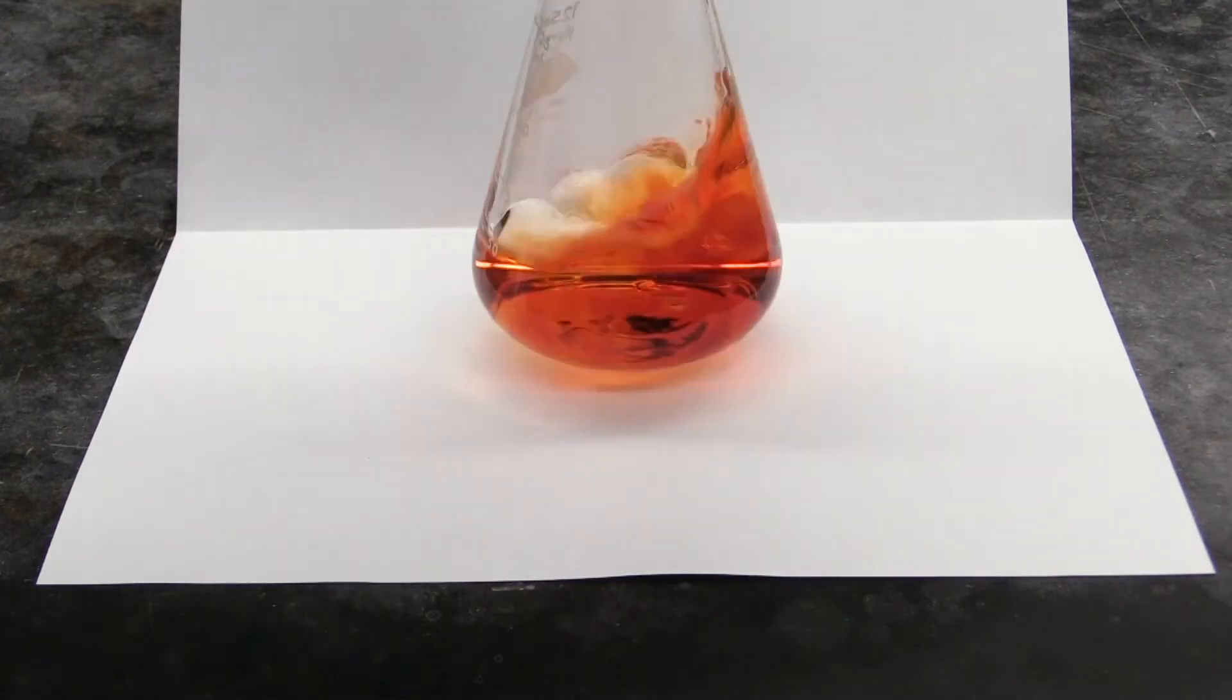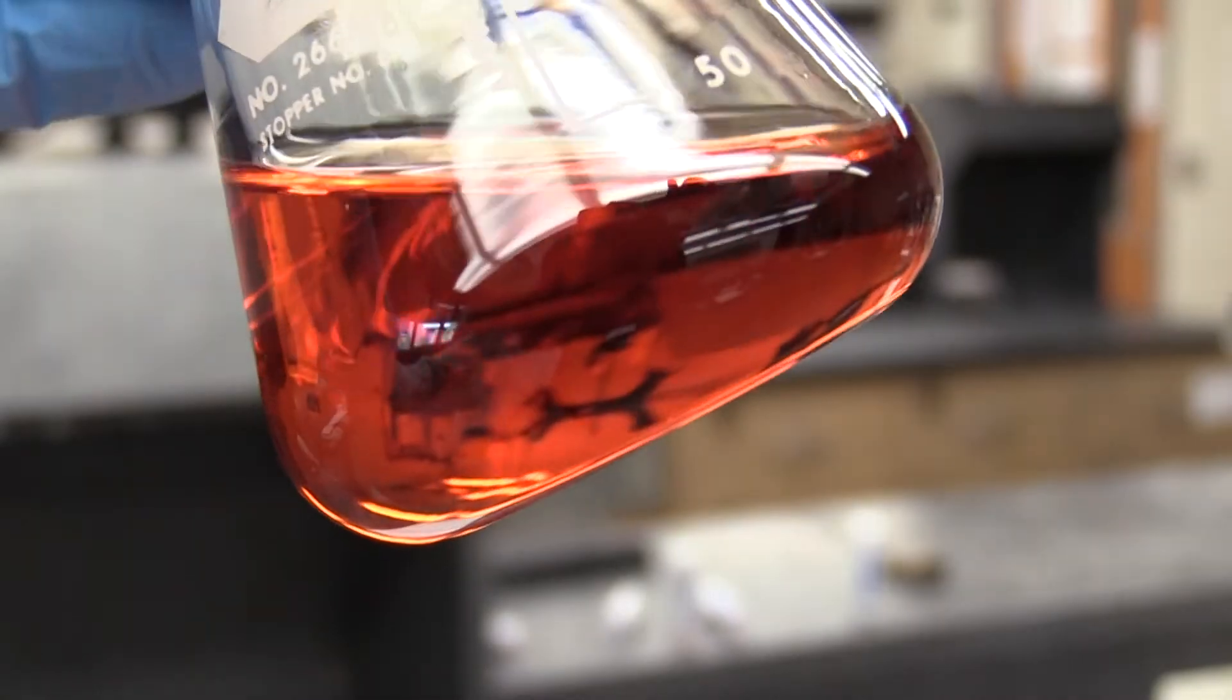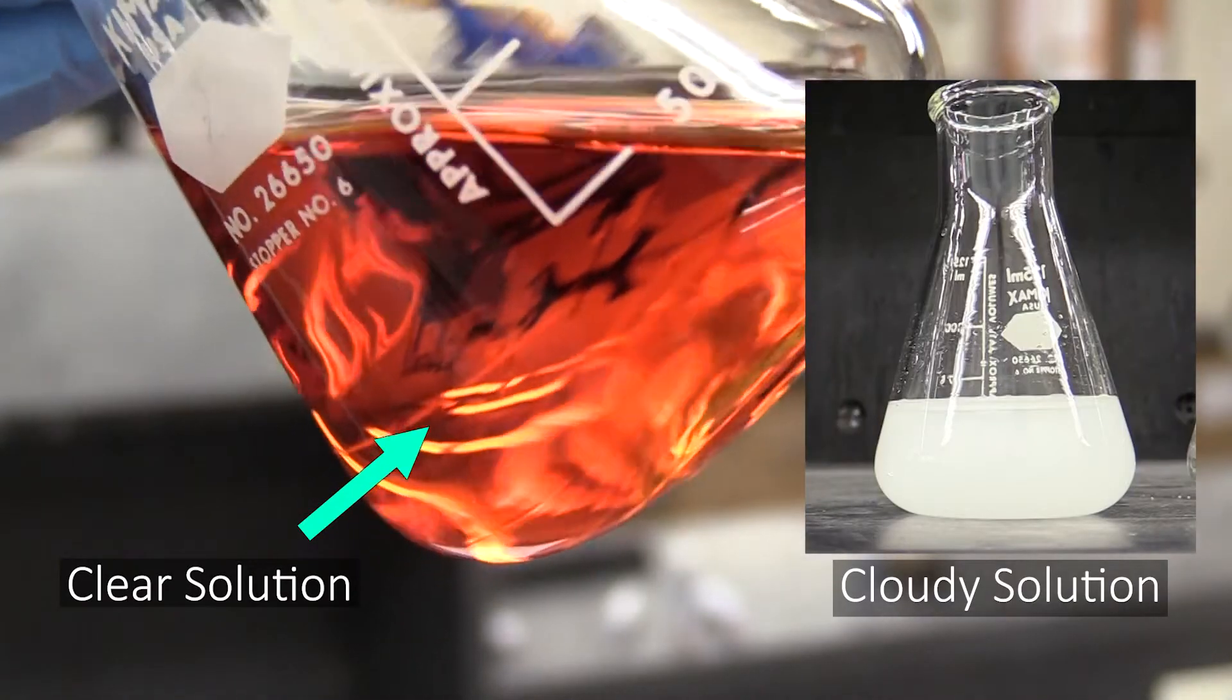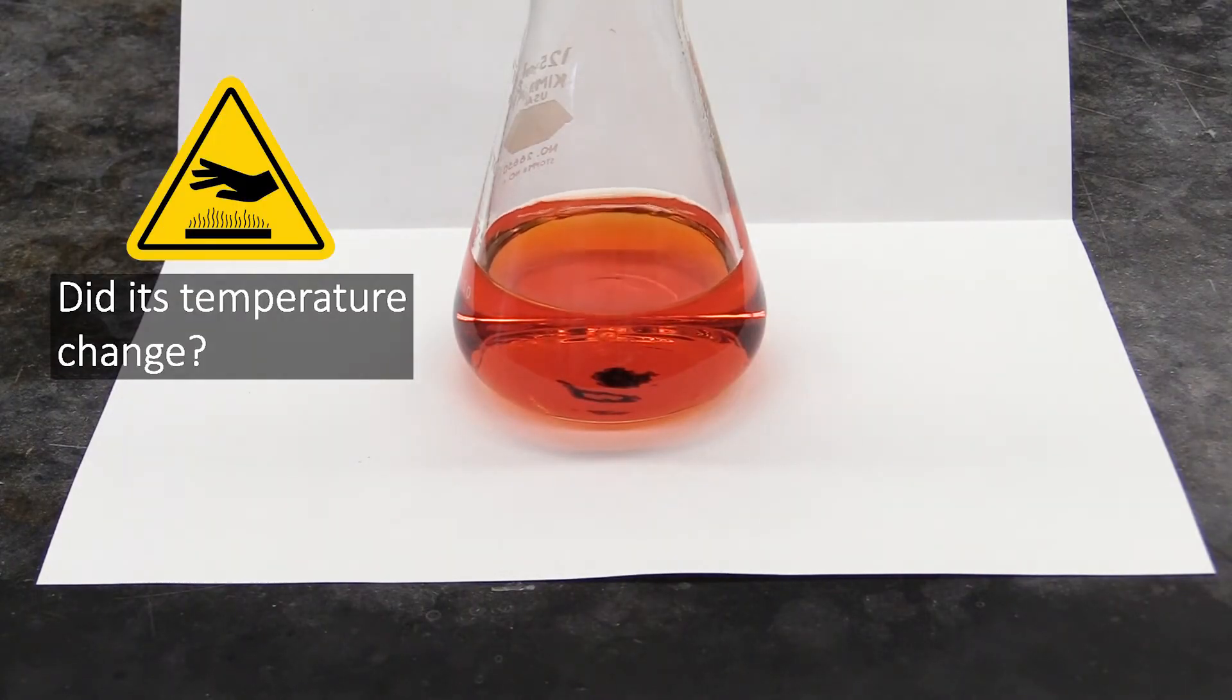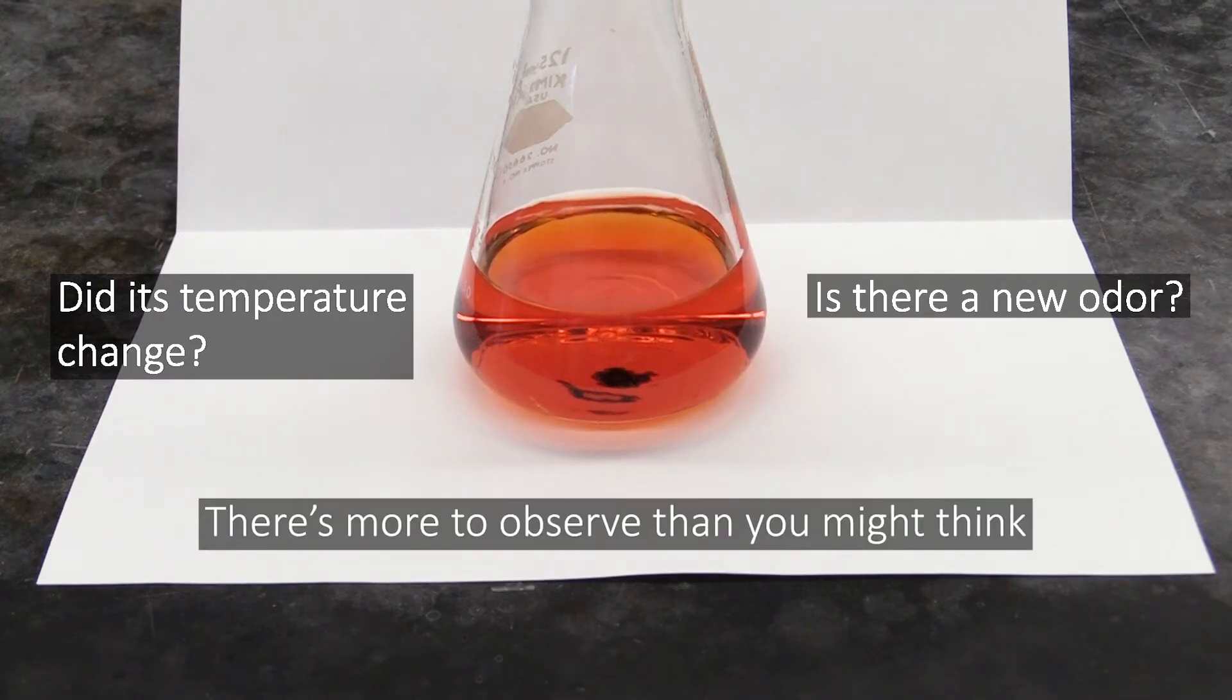However, we can do better than simply saying the solution was colorless and then became red. Even though it changed color, it's still clear and not cloudy like the contents of this flask, so you could note that as well. You could also feel the flask and see if it changed temperature, or smell the contents and see if their odor changed. The point is, when making observations, you want to keep your senses open and note as much as you can.